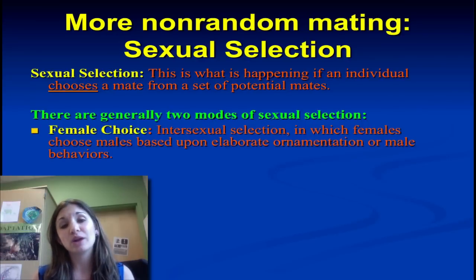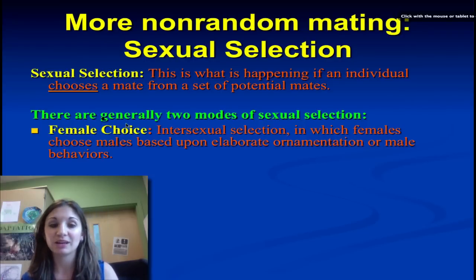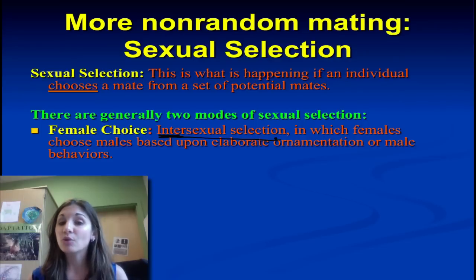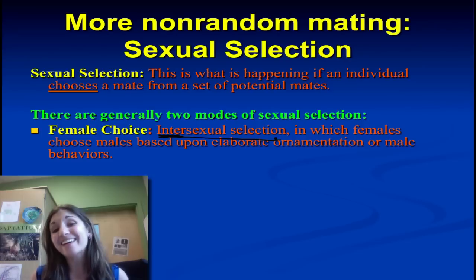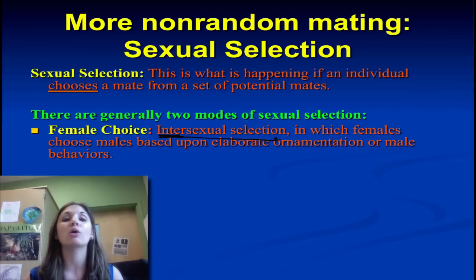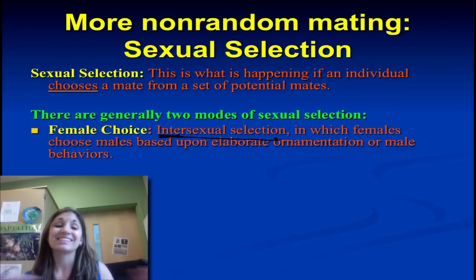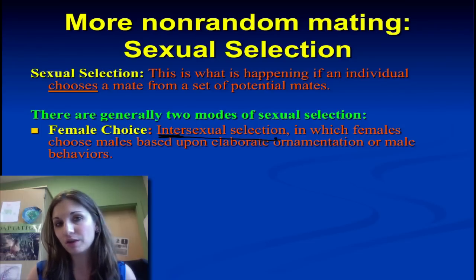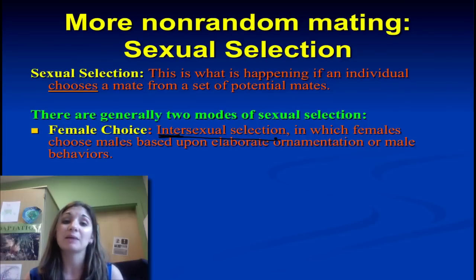In female choice — which we call intersexual selection, inter because it's between the two sexes — females are going to choose mates based on characteristics which are an indicator of their fitness. In order for this to spread, we want to make sure the trait is an honest indicator of fitness. For example, females choosing based on coloration or plumage, the complexity of a bird call or song, courtship displays, or overall demonstration of fitness.